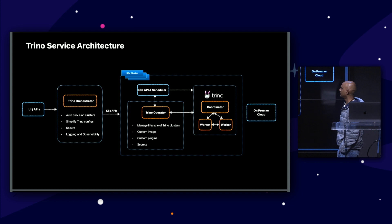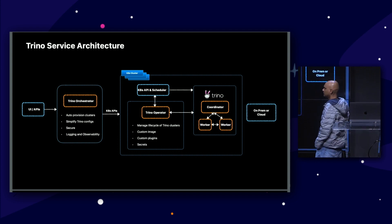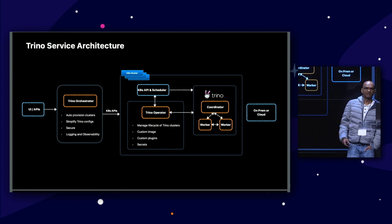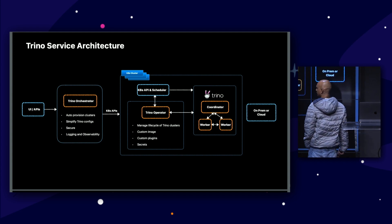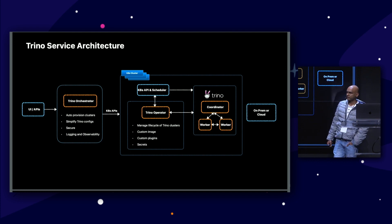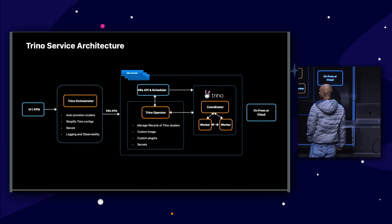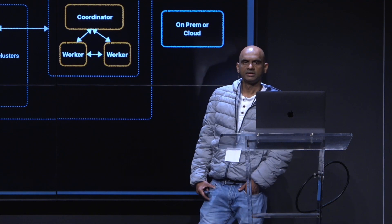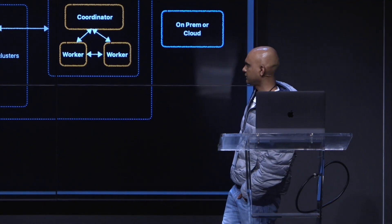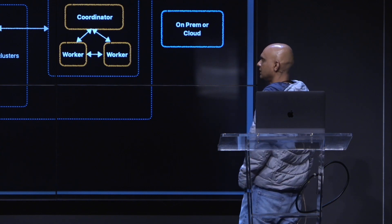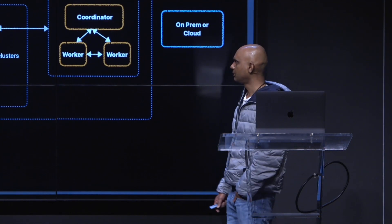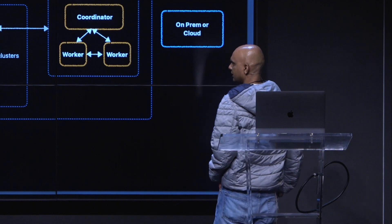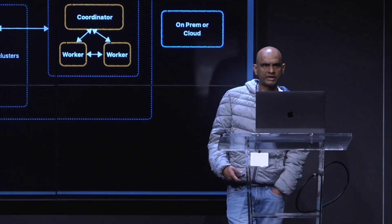Now let's talk about the Trino orchestrator. Our orchestrator is a web-based console for managing the end-to-end lifecycle of the Trino cluster, including auto and manual scaling of Trino clusters. It simplifies the Trino configuration for users. Security is enabled by default, so it takes care of ACLs for cluster management and authentication and authorization for the Trino clusters. ACLs for network are also handled. Our dashboards are integrated with logging and telemetry systems, and users are able to get real-time logs and metrics of the Trino server.